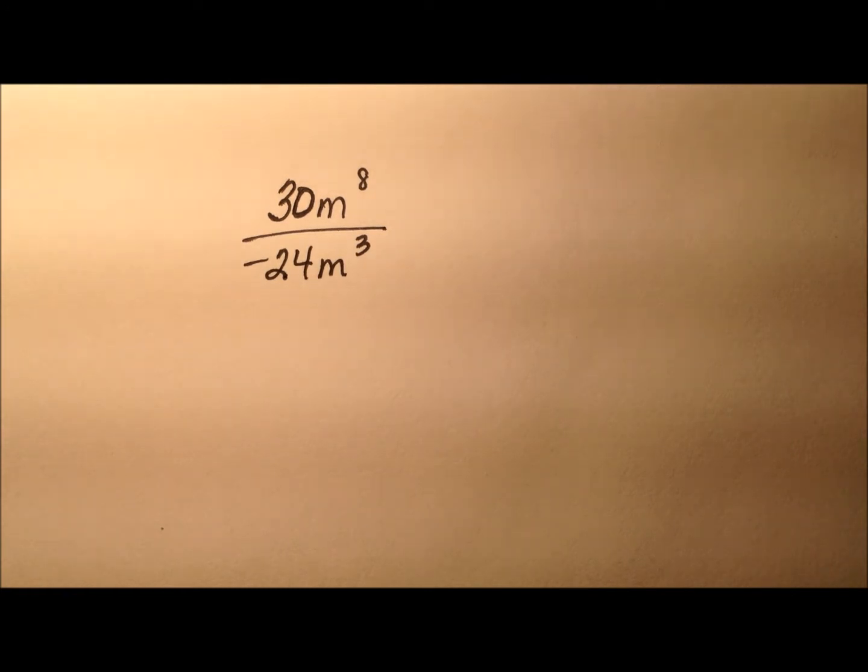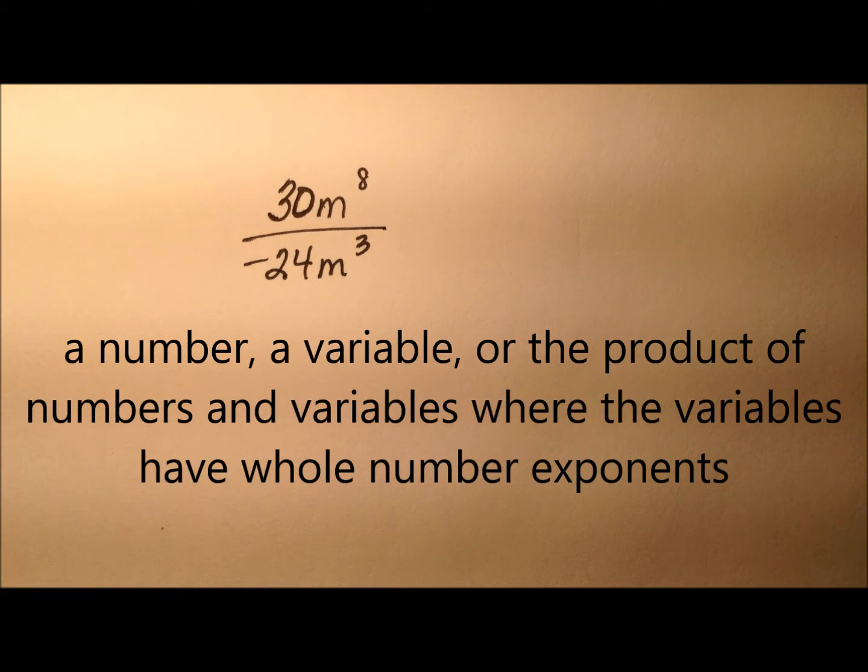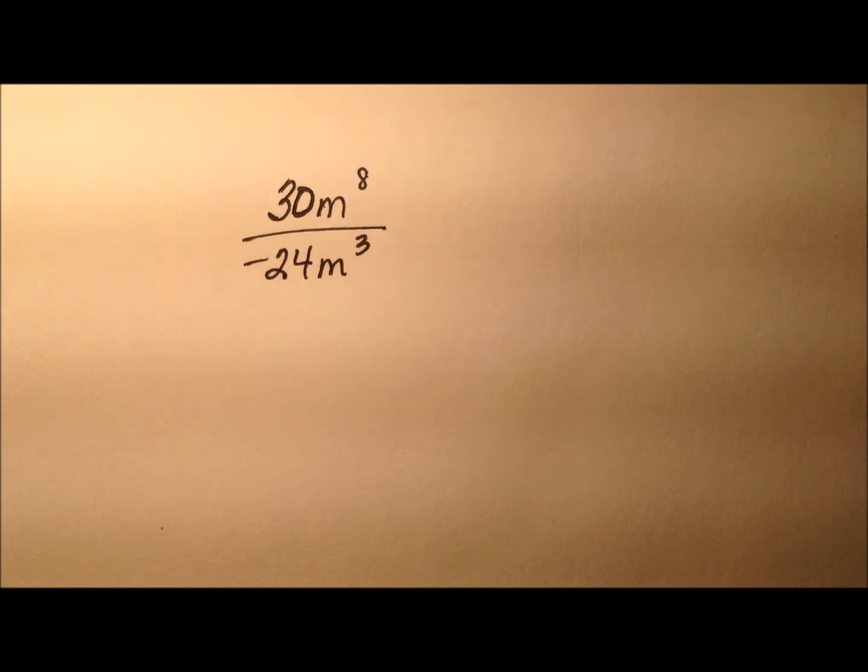Remember, a monomial is a number, a variable, or the product of numbers and variables where the variables have whole number exponents. So in order to be a monomial, you have to have the variable in the numerator and it has to be a whole number exponent. Let's take a look at a couple of examples and see how sometimes that's the case, but sometimes it's not.